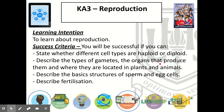That's us finished learning about reproduction. I hope you can now state whether different cell types are haploid or diploid, describe the types of gametes, the organs that produce them, and where they're located in plants and animals, describe the basic structures of sperm and egg cells, and describe and give the definition for fertilization. Please feel free to go back and watch parts of this video again if you need a refresher. Thank you for listening.